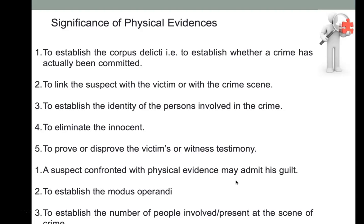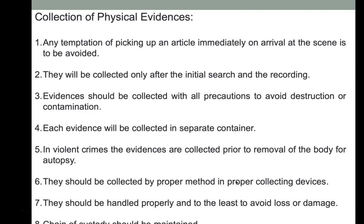Eighth, physical evidence helps establish the number of people present at the crime scene. For example, if three glasses are found at a crime scene, fingerprint analysis can reveal how many distinct individuals were present. If three different fingerprints are found, three or more people were there; if the same fingerprint is on all three glasses, it suggests a staged crime scene. The next session will cover the collection of physical evidences. Thank you.